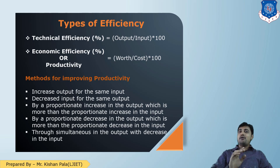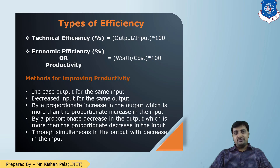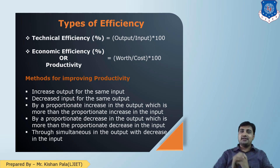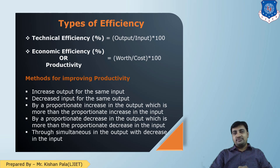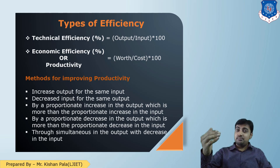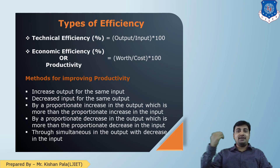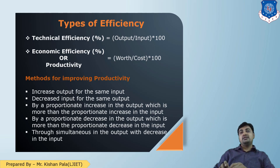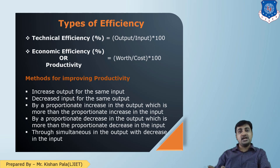Now we have to understand about productivity and economic efficiency. When you are investing in a particular project, how much worth will you get from it — that is productivity, that is economic efficiency. As you can see on the slide, it is worth divided by cost multiplied by 100. You are investing a particular cost and you will get worth from that project or plant.